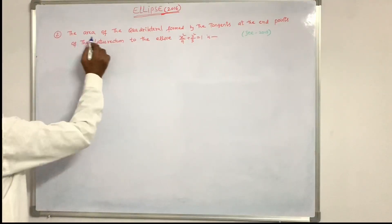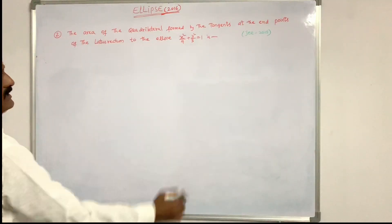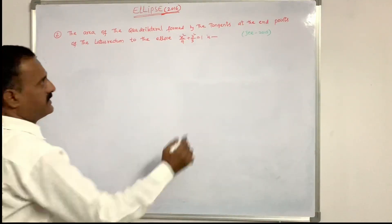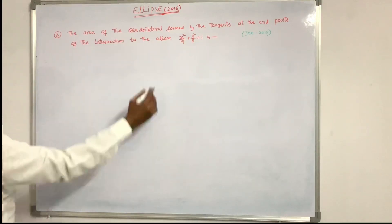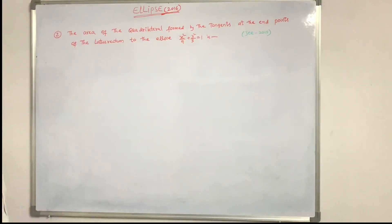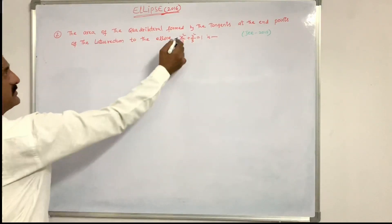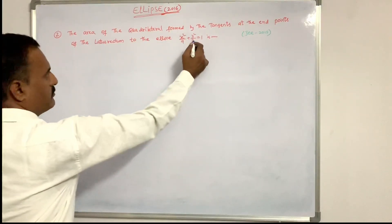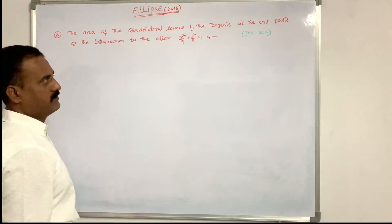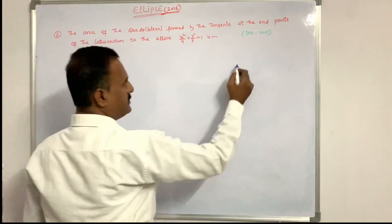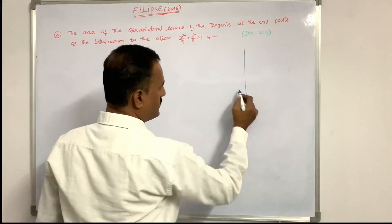The area of the quadrilateral formed by the tangents at the endpoints of the latus rectum to the ellipse x²/9 + y²/5 = 1 is?